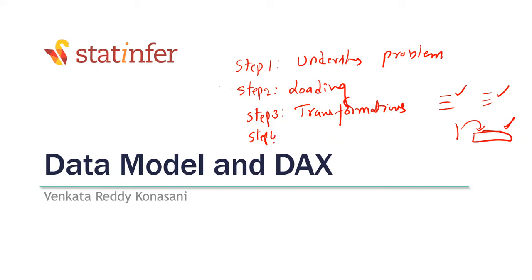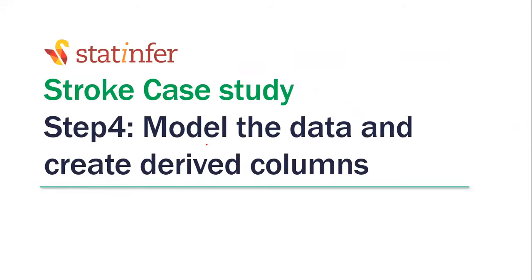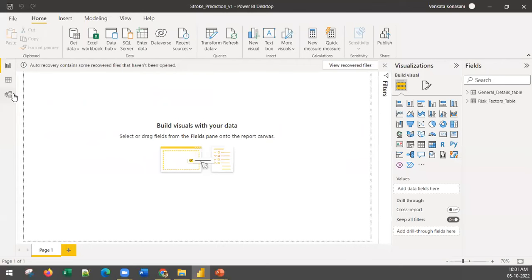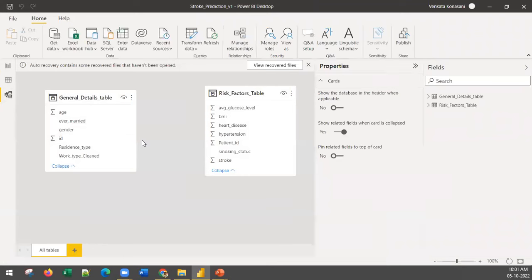Now let us go to step four. Step four is known as creating the data model. The term 'model' here does not carry its literal meaning — the data model means creating the relations between the tables. It's a very simple concept. If you want to model the data, there is an option on the left-hand side called 'Model' — the third icon. Right now these two tables are not connected.